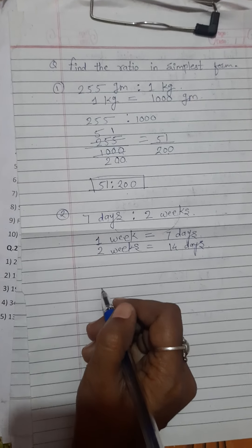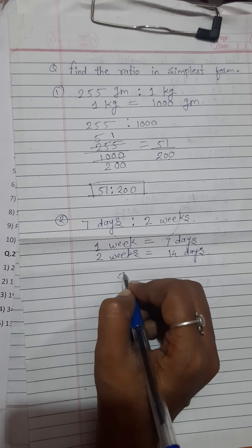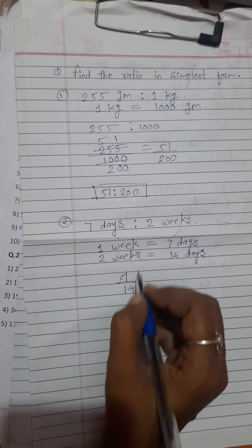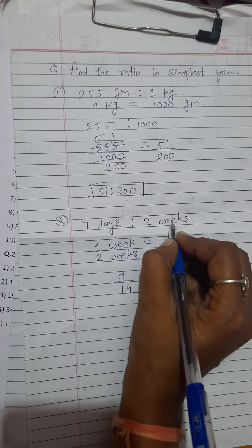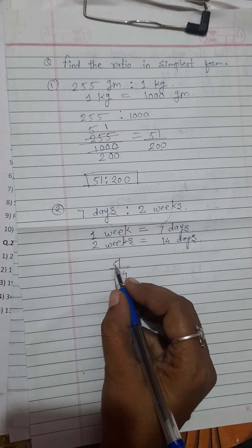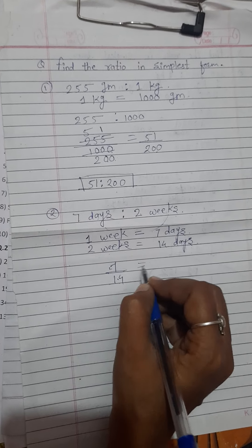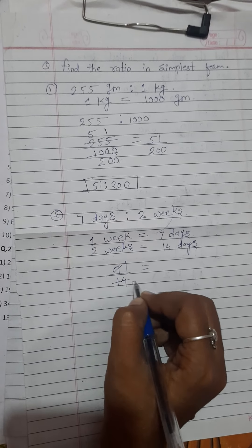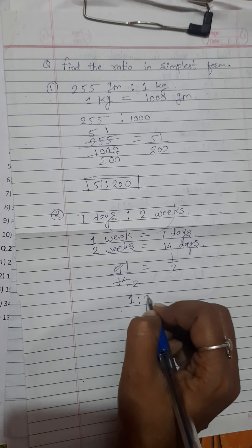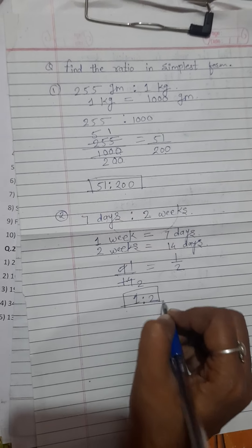Now, just solve that. 7 minus 14. Why we take here 14? Because in question, they ask us 2 weeks. And 2 weeks means 14 days. Now, 7 divided by 14. Just solve that. 7 once a 7. 7 to the 14. 1 by 2. So, our ratio is 1, ratio 2. It's our answer.